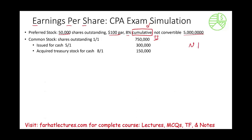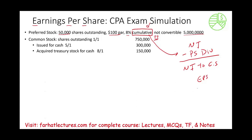Simply put, we have net income and we have to deduct the preferred stock dividend. Because the preferred is cumulative, whether the company declared the dividend or not, we have to deduct it. Once we deduct the preferred stock, what's left is net income to common shareholders, and this is what we use in the numerator to compute EPS.